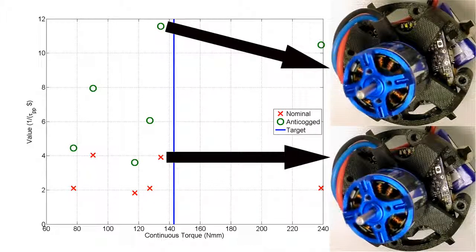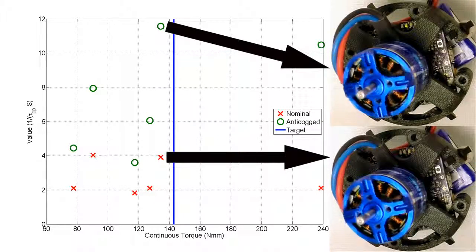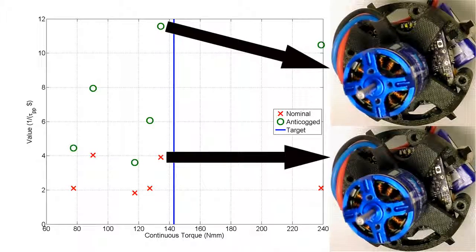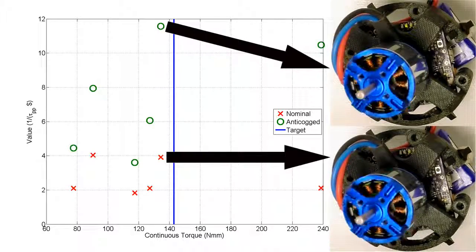But after anti-cogging, the naturally rough Exceed RC Rocket 400 has about the same peak-to-peak torque but only cost one-third, and was the cheapest tested motor.